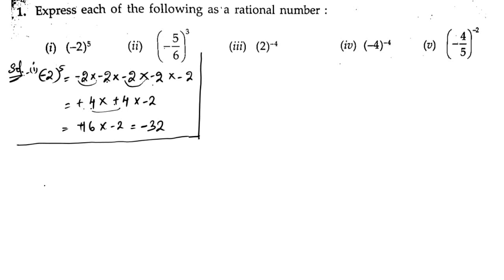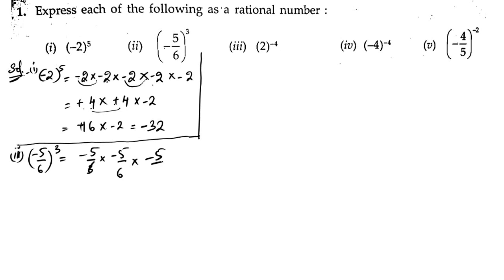Next, second bit: minus 5 by 6, whole to the power of 3. Minus 5 by 6, we have to write it three times: minus 5 by 6 into minus 5 by 6 into minus 5 by 6. The minus sign appears three times, that is an odd number of times. If it is an odd number of times, we will get minus.